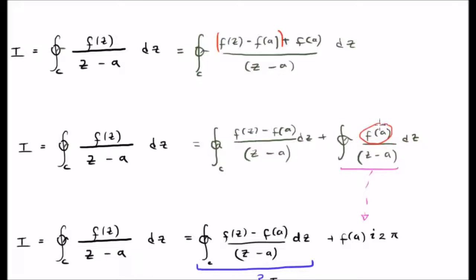The point here is that f of a is simply a constant, and we've already basically seen this integral. Because above we had f of a equal to 1, and we saw that this integral turned out to be twice pi times i. Now, because f of a is not 1, it's simply f of a, we're going to get twice pi i times f of a.